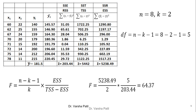Using the F formula: n minus k minus 1 divided by k, multiplied by ESS divided by TSS minus ESS, putting in the values gives the result 64.37.